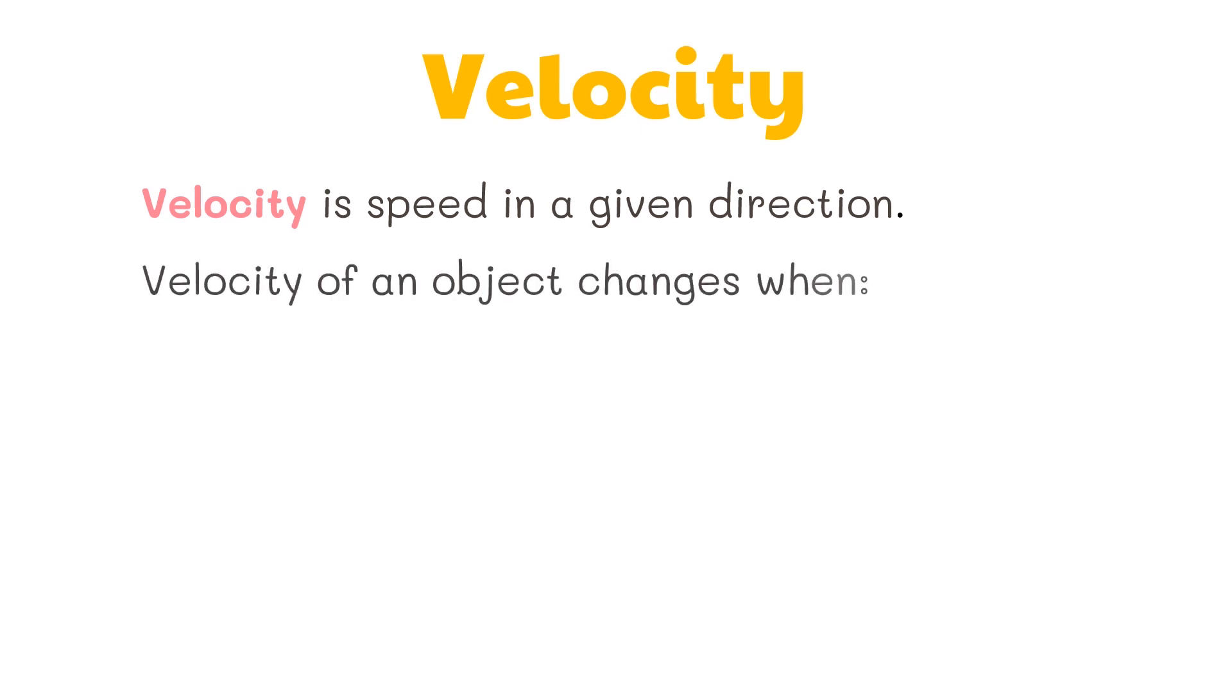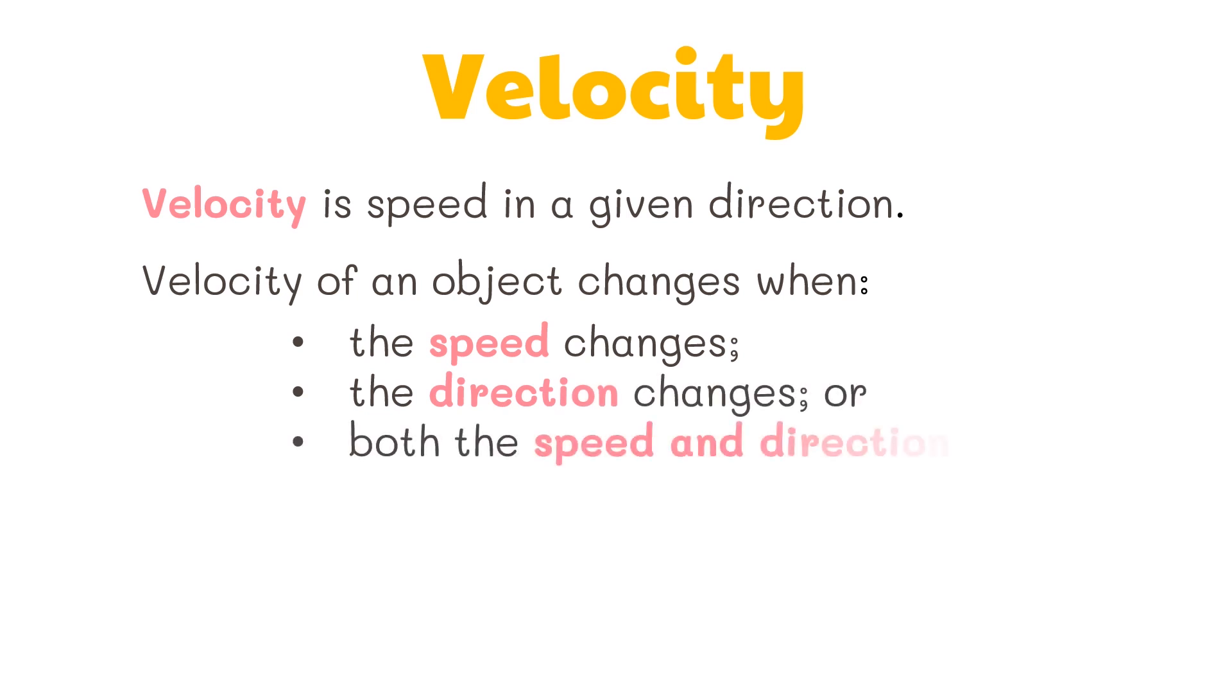When direction is associated with speed, you will have a new quantity known as velocity. Thus, velocity is a speed in a given direction. Velocity of an object changes when the speed changes, the direction changes, or both the speed and direction change.